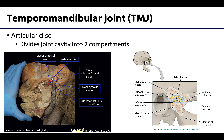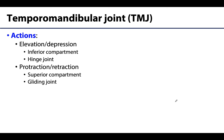The articular disc is a fibrocartilaginous disc that separates the joint cavity into two different compartments — a superior space and an inferior space. This allows different complexes of movement to occur in each compartment. In the superior compartment, this allows for protraction — jutting out the mandible — and retraction, returning to anatomical position; this is a gliding movement. In the inferior compartment, this is the hinge part of the TMJ — the opening and closing of the mouth to allow mastication.